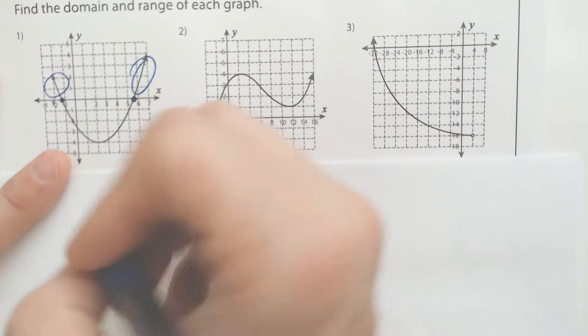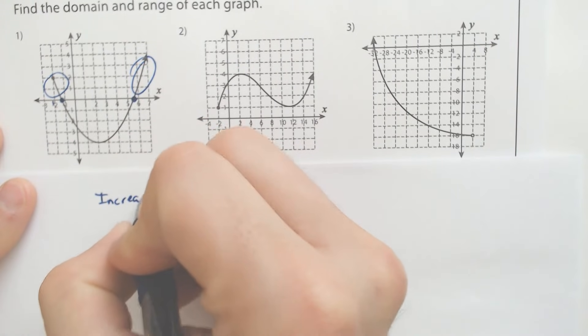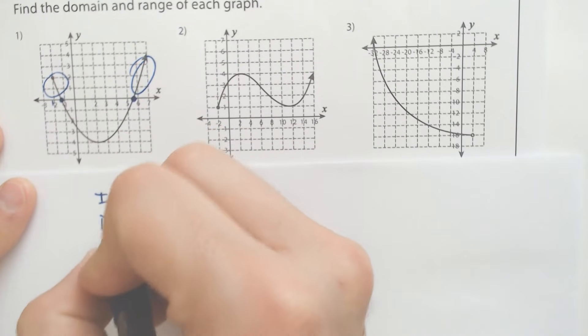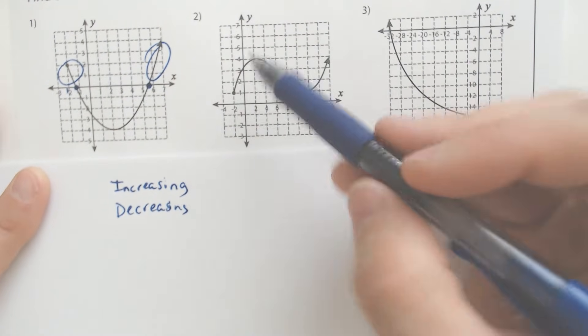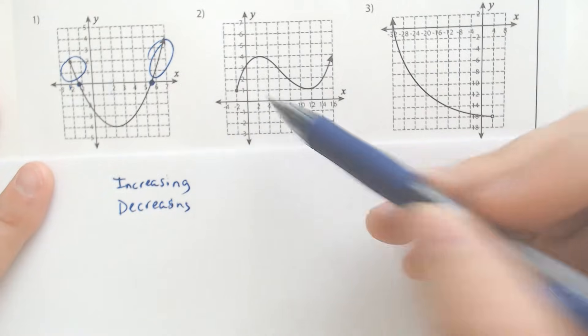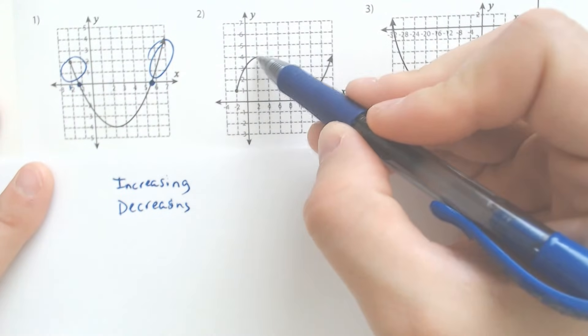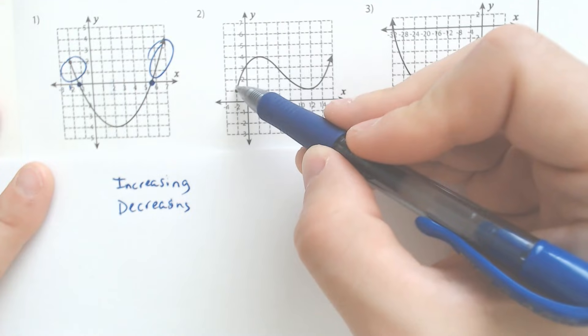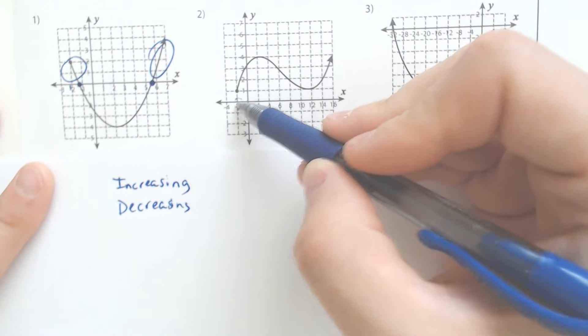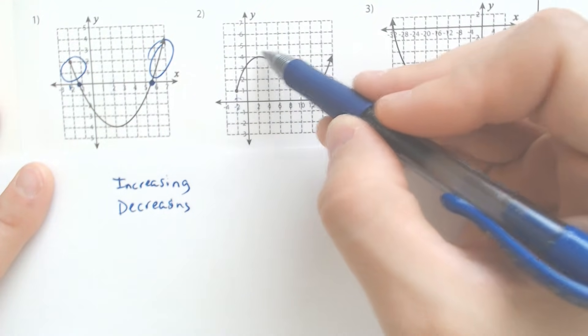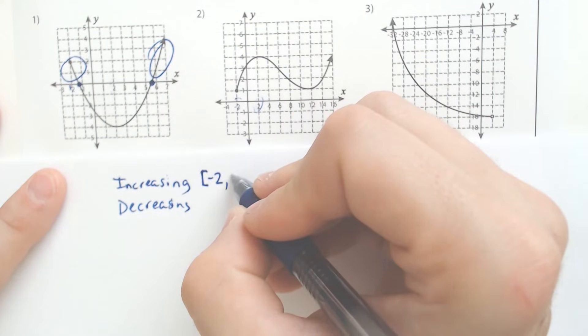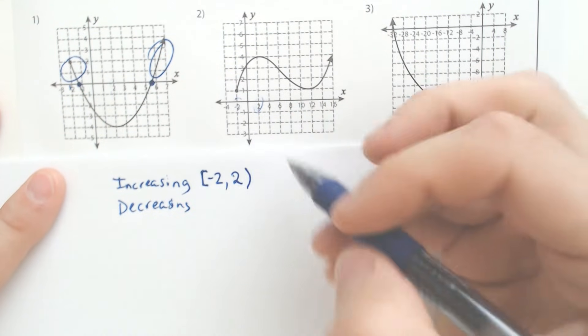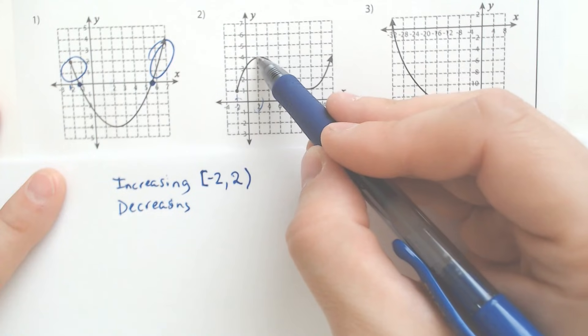When are we increasing? When are we decreasing? And let's go from there. So we are increasing on this little chunk. We're having a great time on a roller coaster. We're going up. We're getting ready from negative two to the top, which looks like it's at two. So that's convenient. The exact same answer as last time.